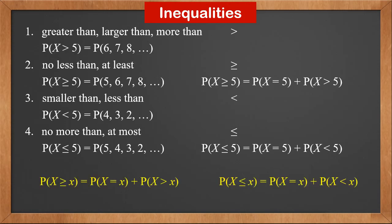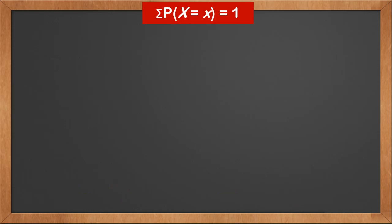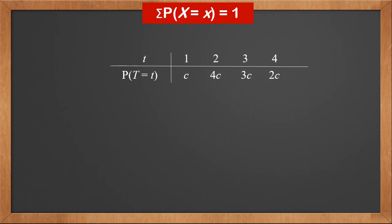In general, P(X ≥ x) plus P(X < x) equals 1, and equivalently P(X > x) plus P(X ≤ x) equals 1. We know one important property of probability distribution is that all probabilities add to 1, and we can use this to solve some problems.